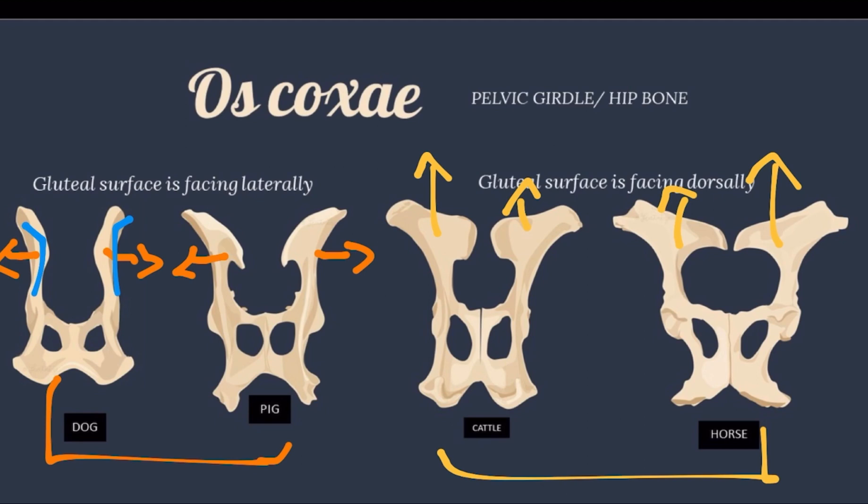In cattle, the gluteal surface is facing dorsally, the wing of ilium has one gluteal line, three prominences on the ischiatic tuber, the obturator is wide and sharp medially, and the pelvic symphysis has a distinct ventral ridge. In the horse, the wing of ilium also has one gluteal line.